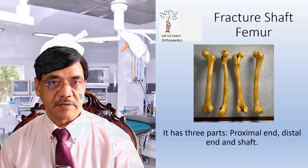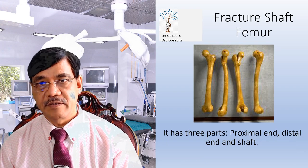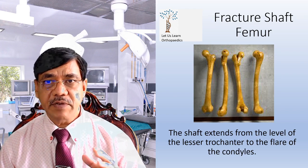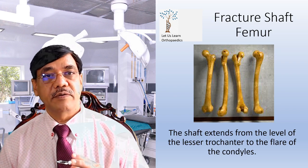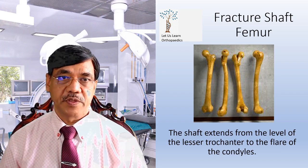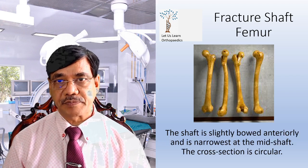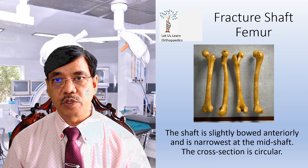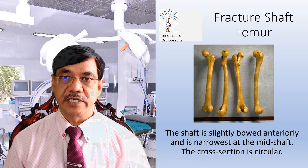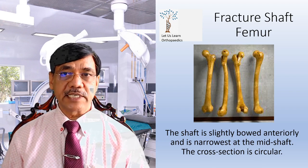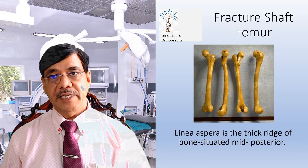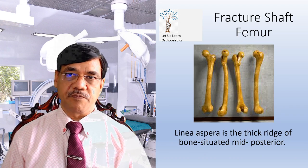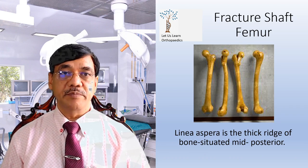It has got three parts: the proximal end, the distal end, and the shaft. The shaft extends from the level of the lesser trochanter to the flare of the condyles. The shaft is slightly bent anteriorly and is narrowest in the mid-shaft. The cross section is circular. Linea aspera is the mid thick ridge of the bone situated mid-posteriorly.